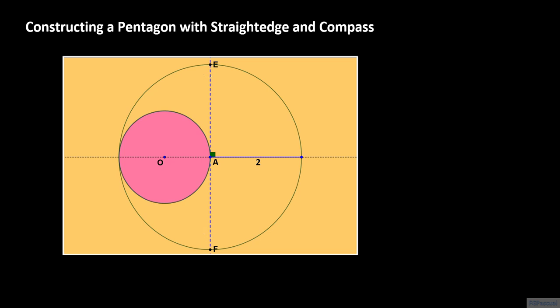Observe that points O, A, and E are vertices of a right triangle whose legs are 1 and 2. Therefore, the hypotenuse has length square root of 5. We use segment OA again, the unit length, as the radius for our compass.